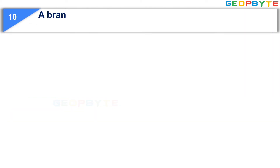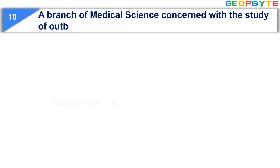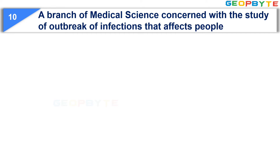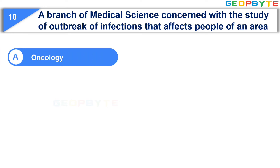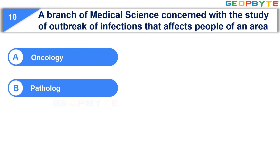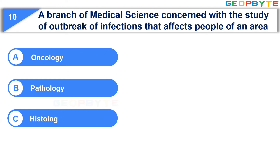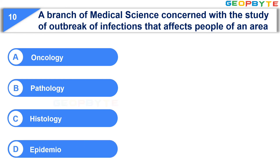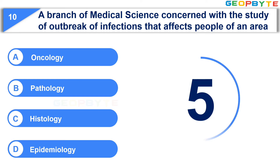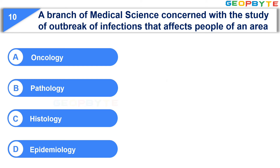A branch of medical science concerned with the study of outbreak of infections that affects people of an area. Option A: Oncology. Option B: Pathology. Option C: Histology. Option D: Epidemiology. Your time is up and the correct answer is Option D: Epidemiology.